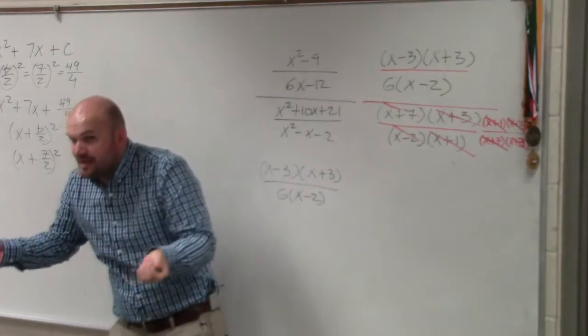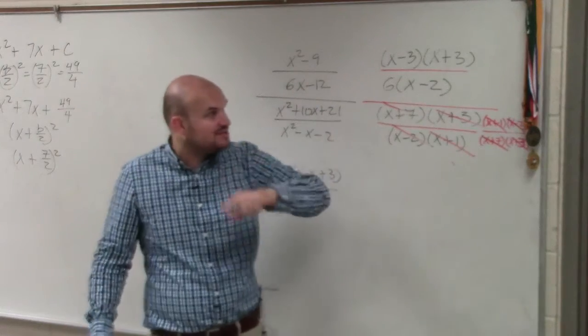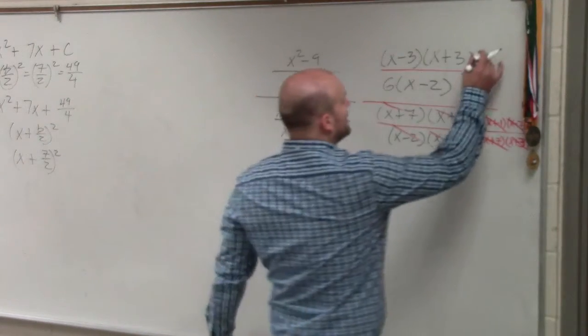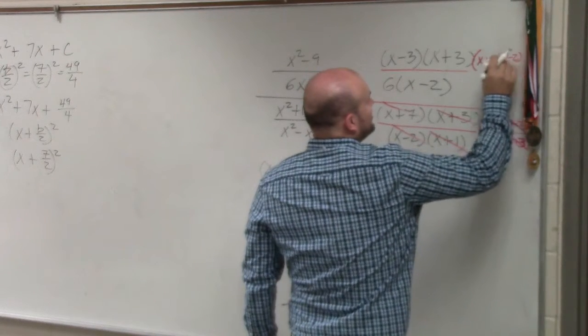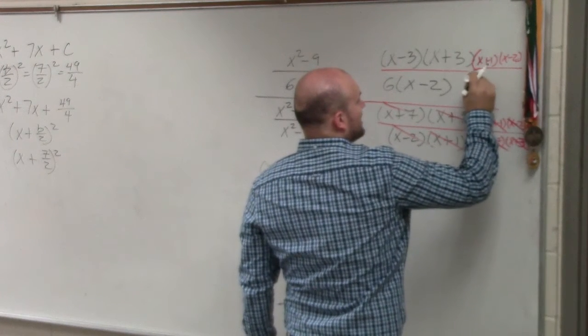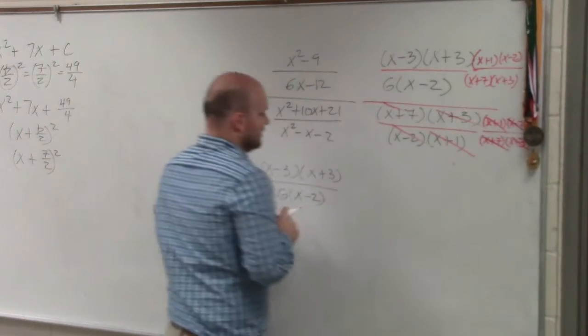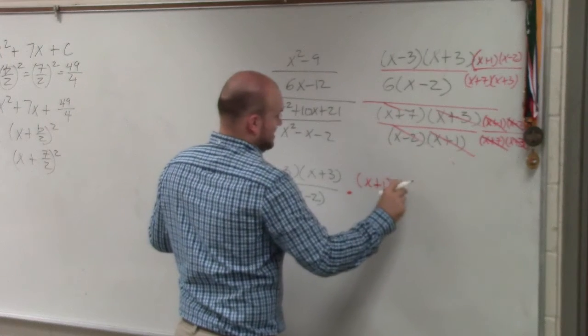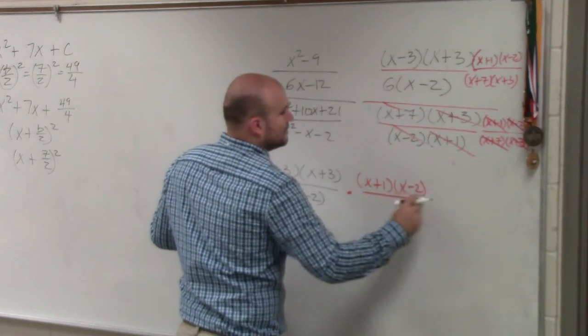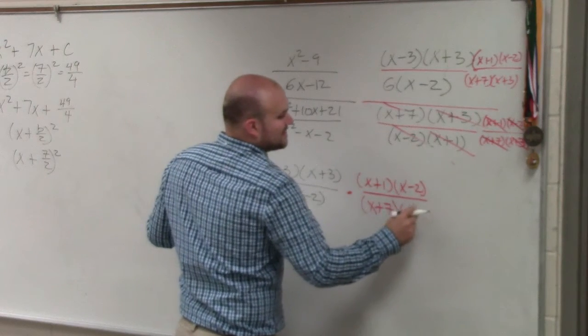But whatever you do in the denominator, you have to do in the numerator to make sure that they are equivalent fractions. So I'd have to multiply my numerator times x plus 1 times x minus 2 over x plus 7 times x plus 3. And that's what that would look like over here: x plus 1 times x minus 2 divided by x plus 7 times x plus 3.